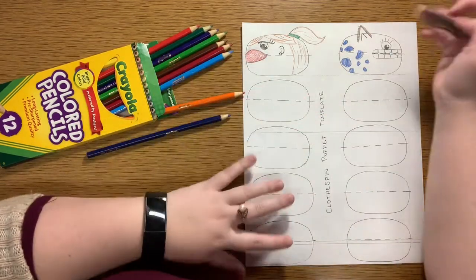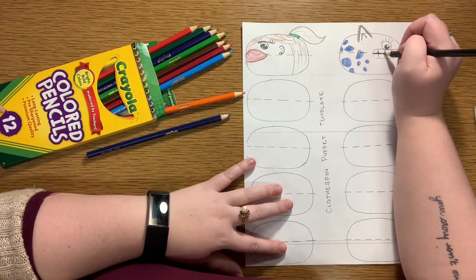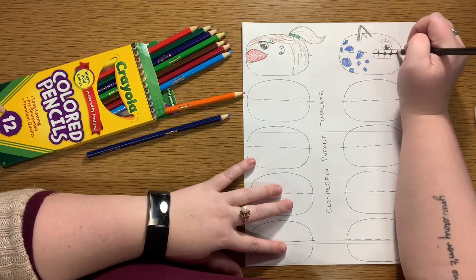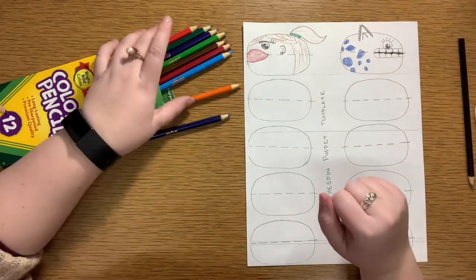I'm going to use some black and really give some shadow here in the mouth where there aren't teeth, so that you can really see where those teeth are.